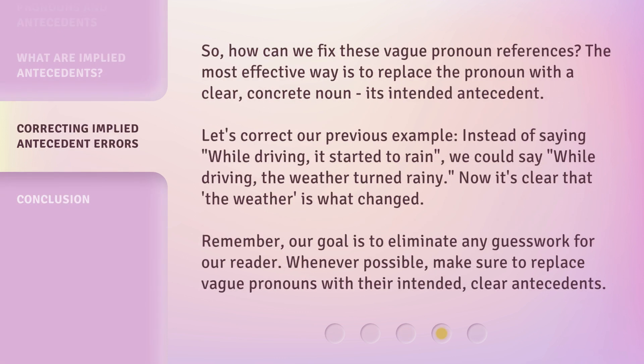So, how can we fix these vague pronoun references? The most effective way is to replace the pronoun with a clear, concrete noun — its intended antecedent. Let's correct our previous example. Instead of saying, 'While driving, it started to rain,' we could say, 'While driving, the weather turned rainy.' Now it's clear that the weather is what changed. Remember, our goal is to eliminate any guesswork for our reader. Whenever possible, make sure to replace vague pronouns with their intended, clear antecedents.